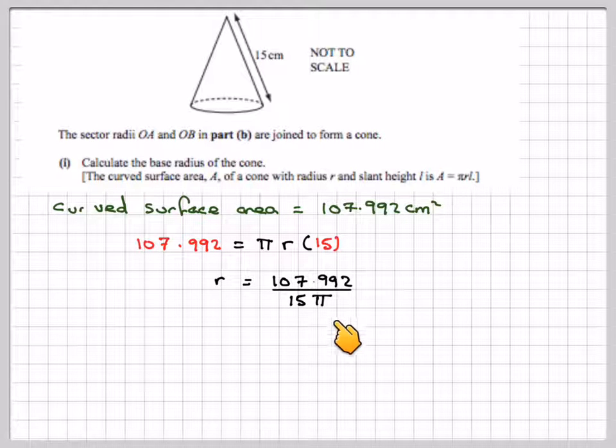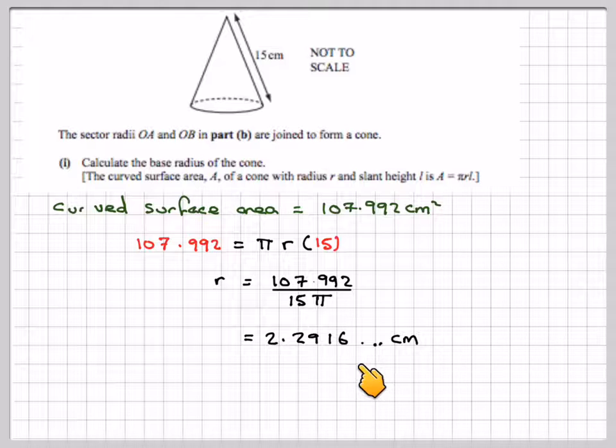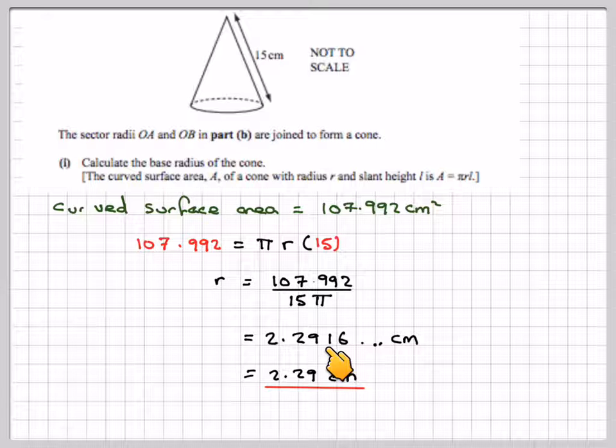R will be 107.992 divided by 15 pi, which is 2.2916 centimetres. Round it off, that's 2.29, but remember we've got to use this in any other part of the question.